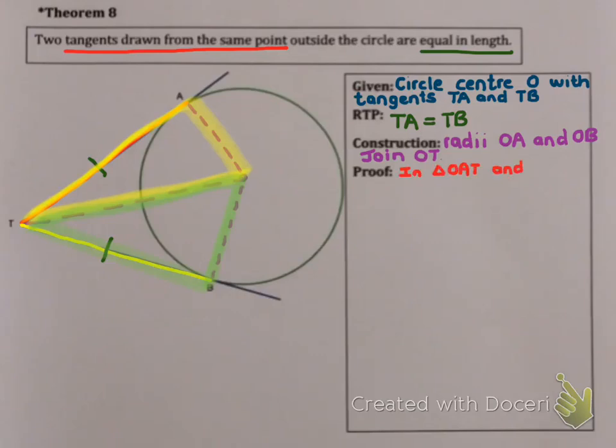So I'm going to start in triangle OAT and triangle OBT. The first thing is that I've already alerted myself to the fact that tangents and radii are perpendicular. So first statement is angle A and angle B must equal each other and must equal 90 degrees, and my reason is from Theorem 7. Tangents are perpendicular to radii.